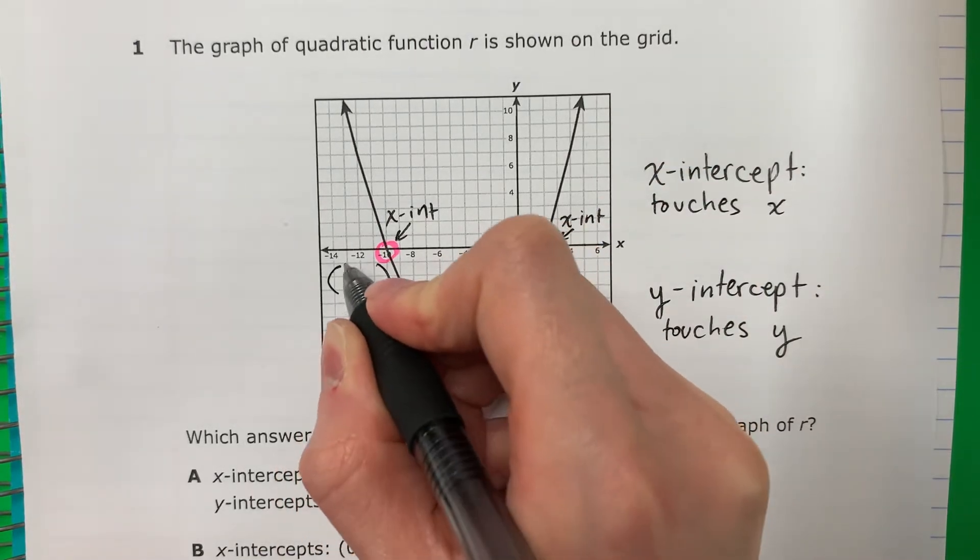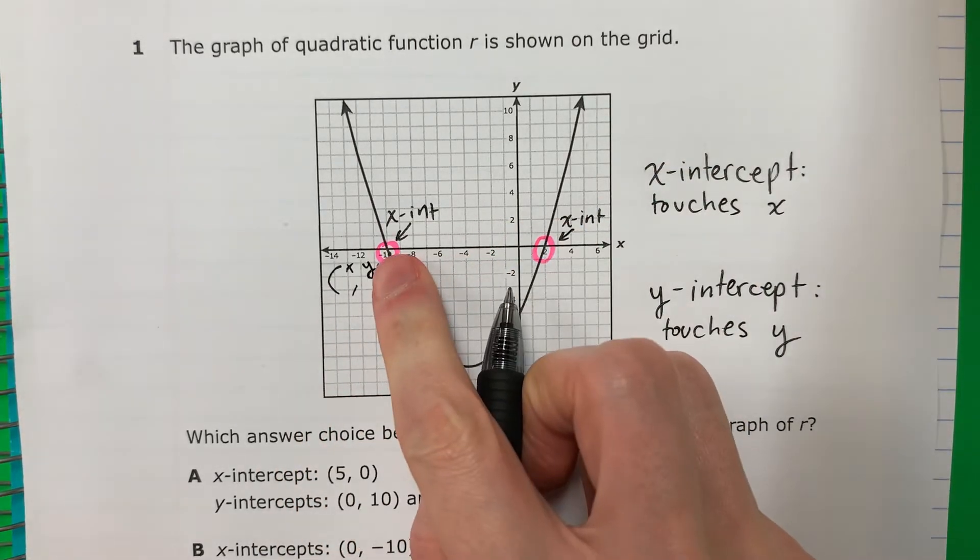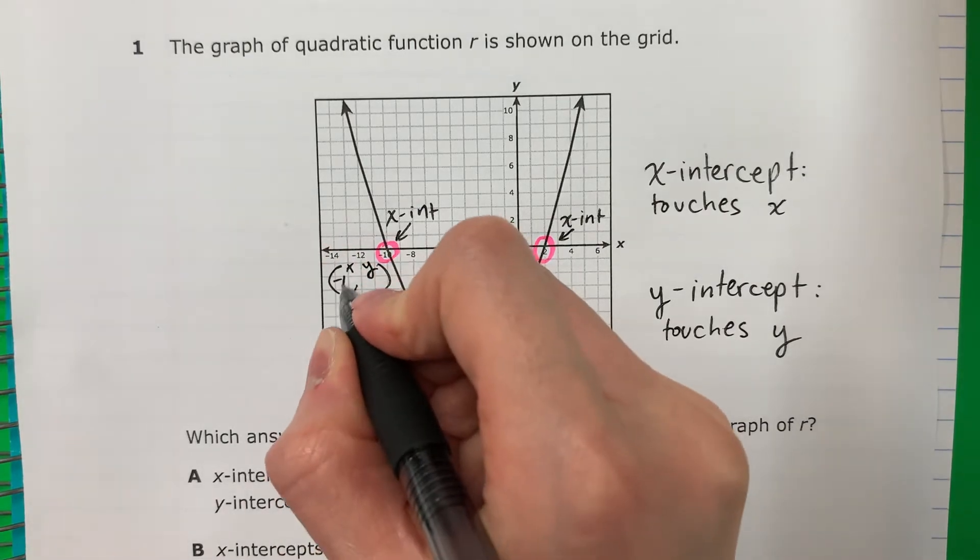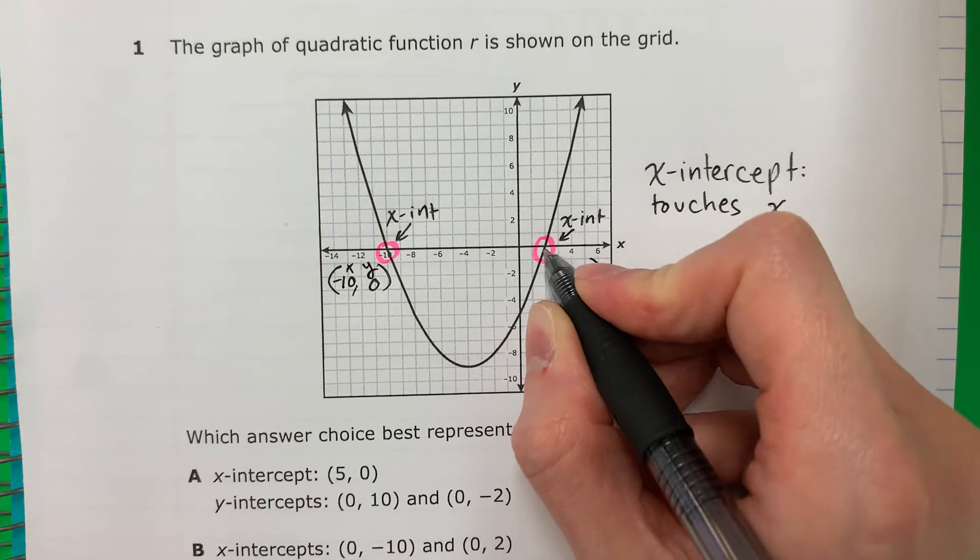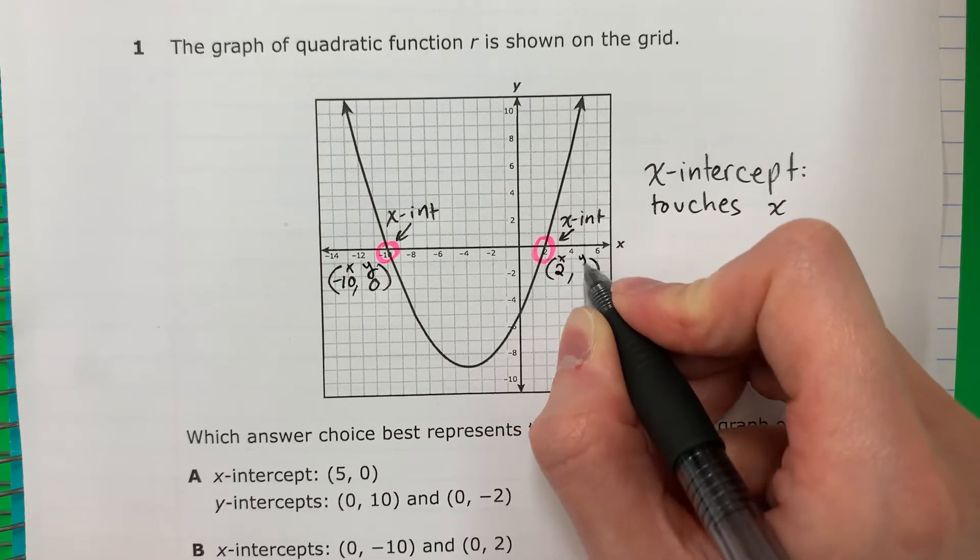So what is the ordered pair for that? X, y. X is negative 10. Y, 0. Here for this one, X is 2. Y is 0.